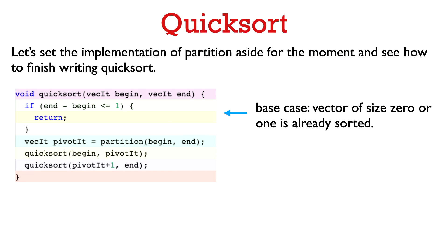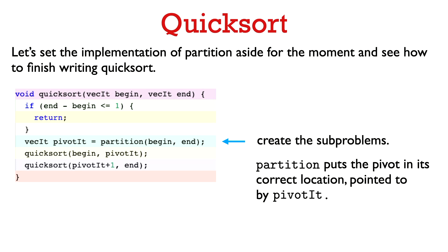Here's the code for QuickSort. It's a recursive algorithm, so we need a base case: when the interval to sort is of size zero or one it's already sorted, so we just return. In the next step we call the partition function; after calling it, the pivot element is in its correct location, pointed to by the return value which we store in pivotit.